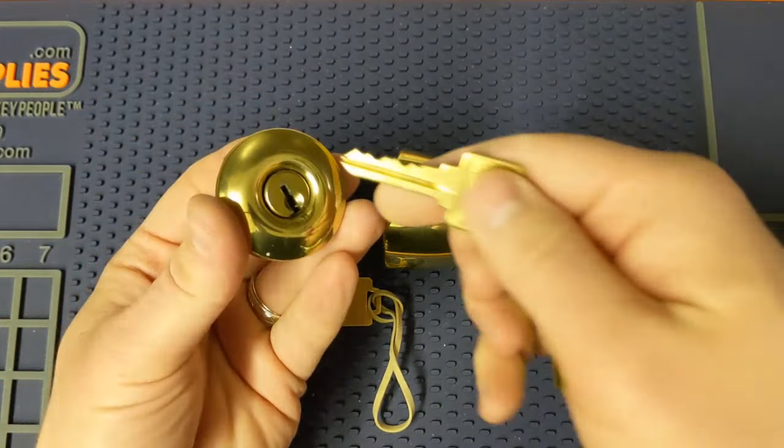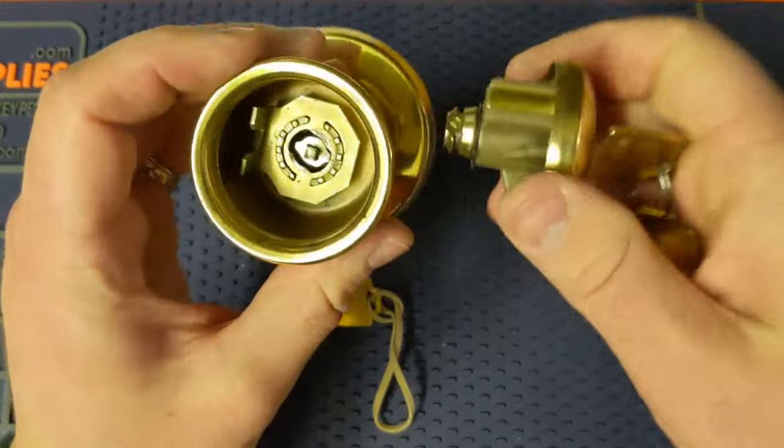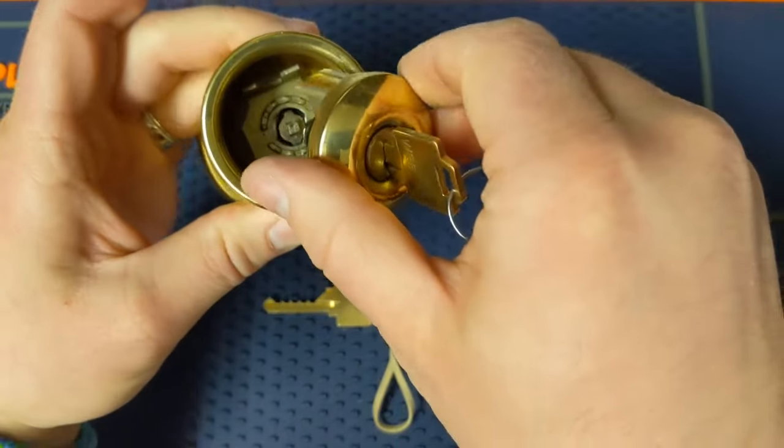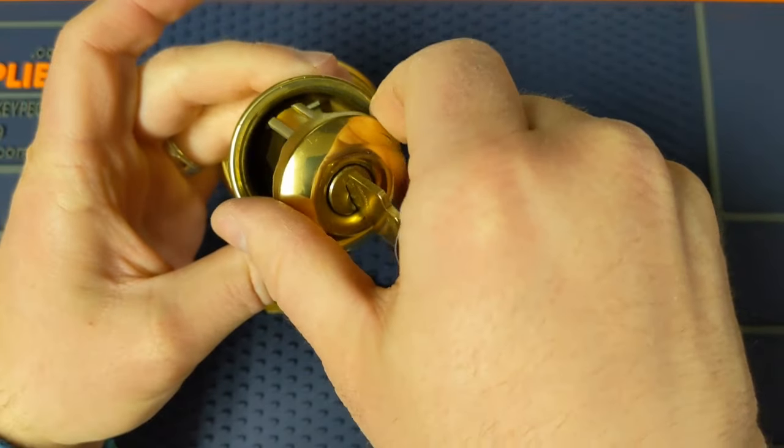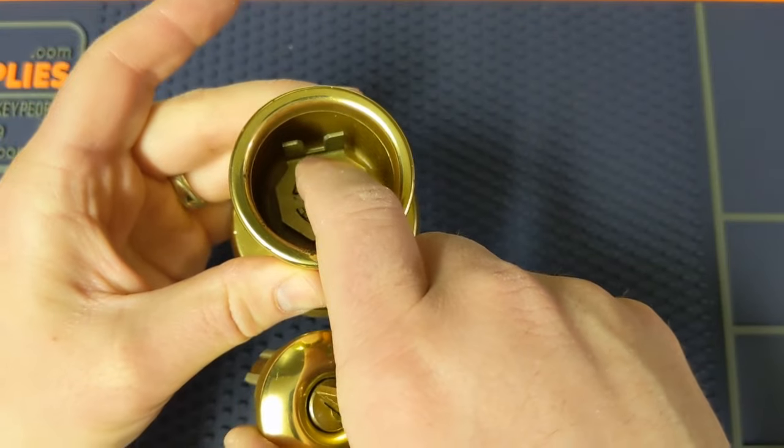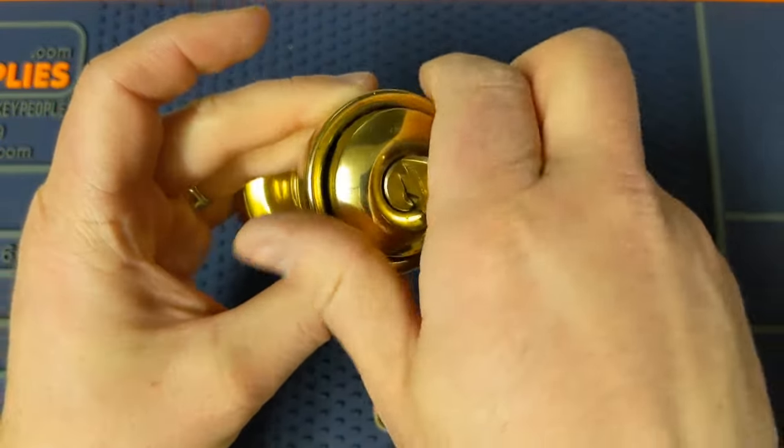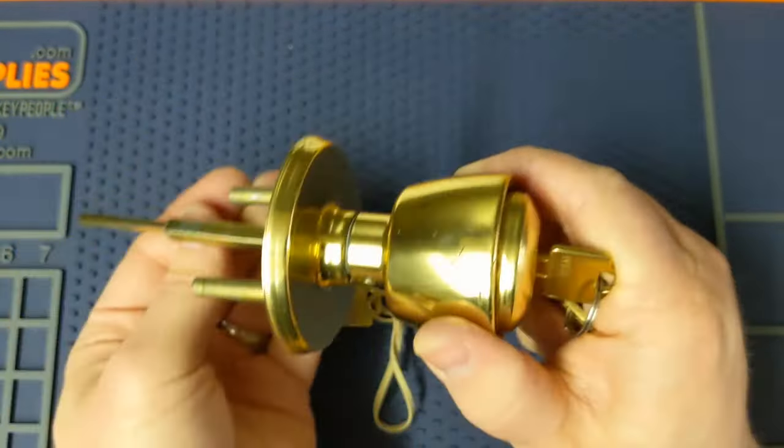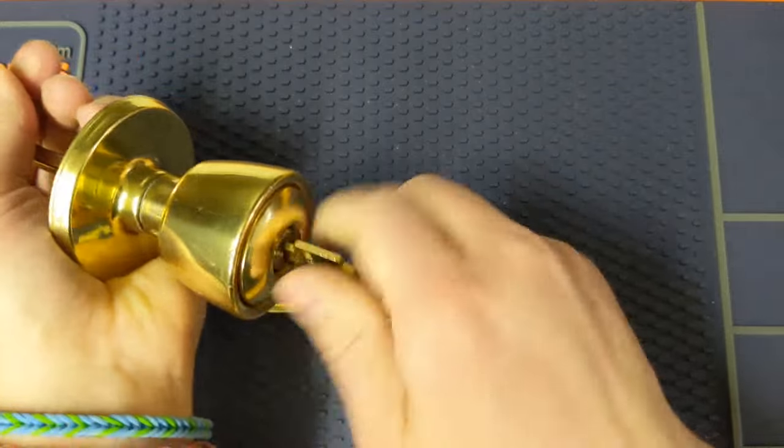Once you're done rekeying it, you're going to take the key that you rekeyed it to and you're just going to want to put it back in. So you're going to line up the bible here to that nice little opening. Let's get the camera to focus there, right there. And then we're going to hold this back, turn it to about the five o'clock position. It's going to pop in and there you go.